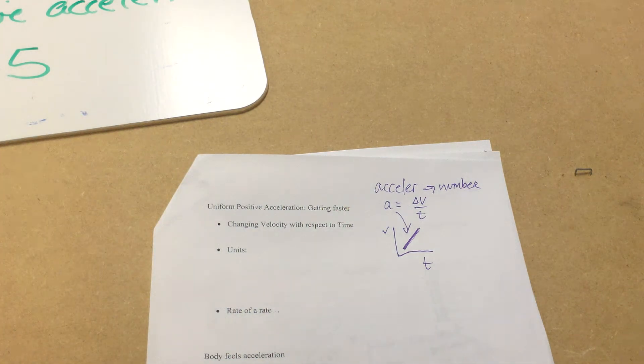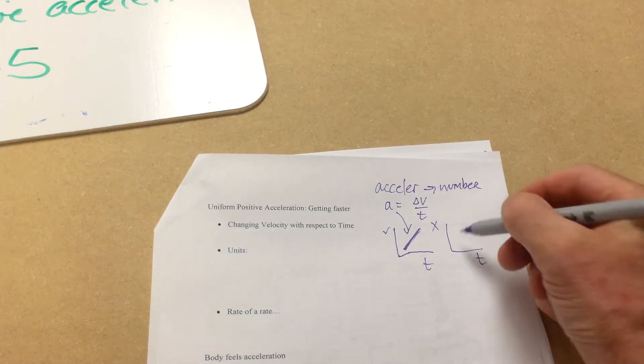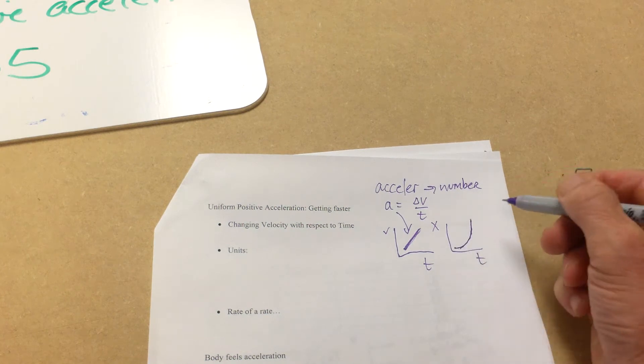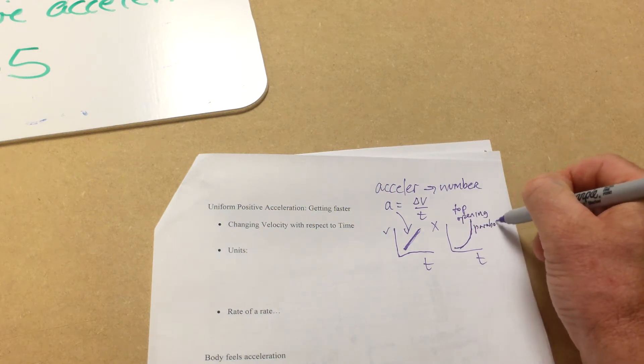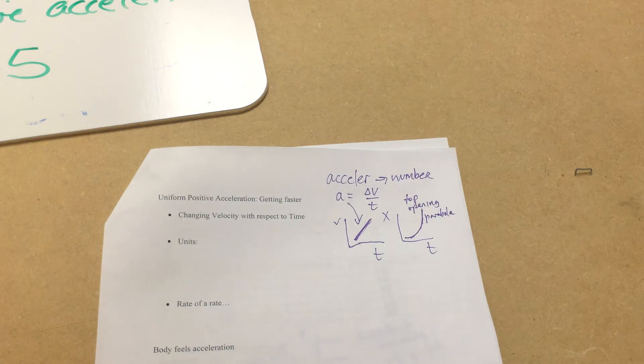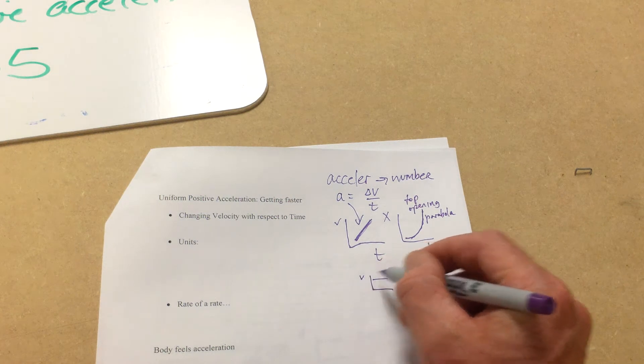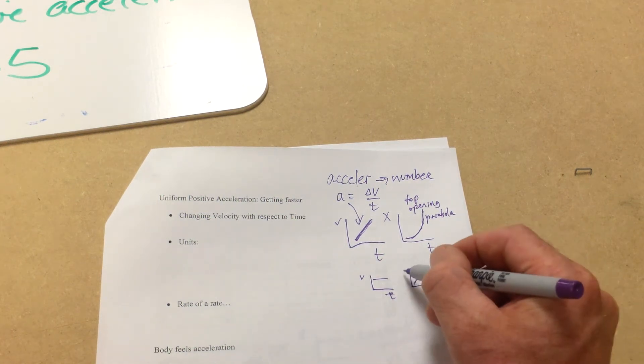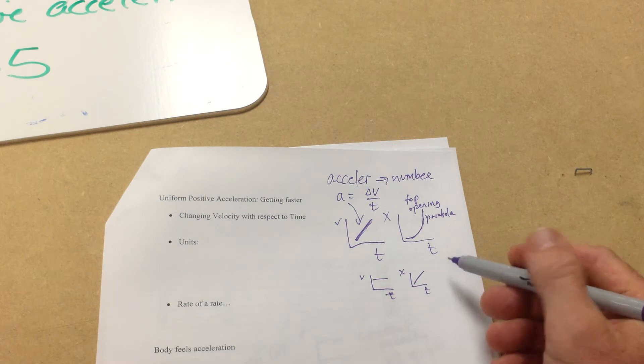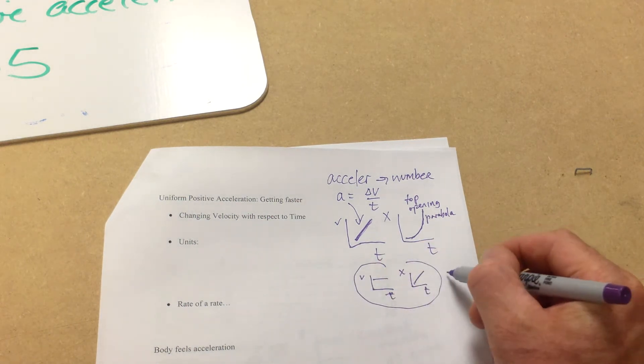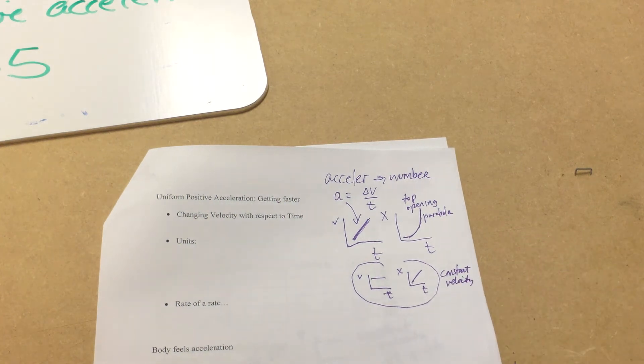Now our velocity is changing with respect to time. What we get then with the position time graph, then we get a parabola. This would be a top opening parabola. This is for an object getting faster. Now how does that compare with an object staying at one speed? Well, our vt graph is a horizontal line and our position time graph is a diagonal. So these two graphs here represent constant velocity.